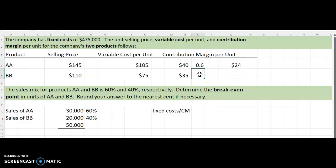And then our contribution margin for BB is going to be $35 times 0.40. So that would be $14. So our sales mix contribution margin would be a total of $38.